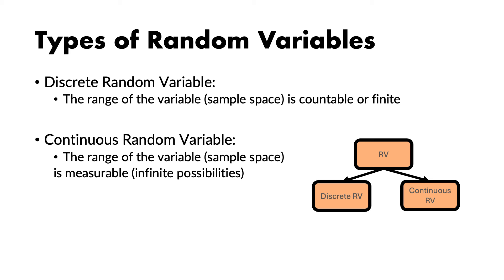There are two types of random variables: discrete and continuous. If the range of the sample space is countable or finite, we have a discrete random variable. If the range of the sample space is measurable with infinite possibilities, we are in the presence of a continuous random variable.